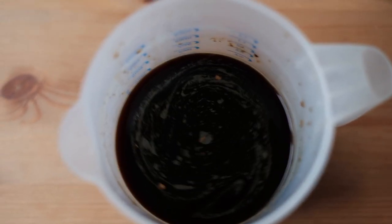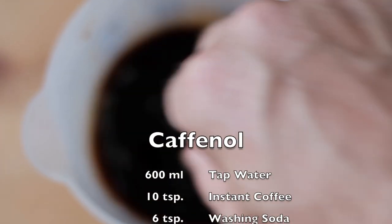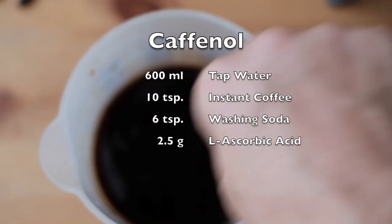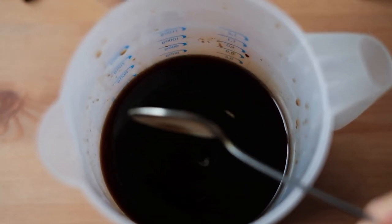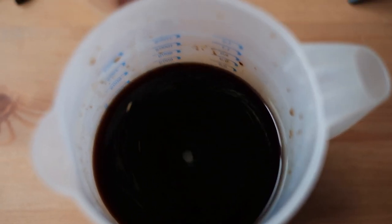My Coffinol which I've put together here consists of 10 teaspoons of coffee, two and a half teaspoons of vitamin C which you can get in the chemist. And I'm not too sure how much washing soda but I'll put the recipe in the description. It's a one-shot developer.